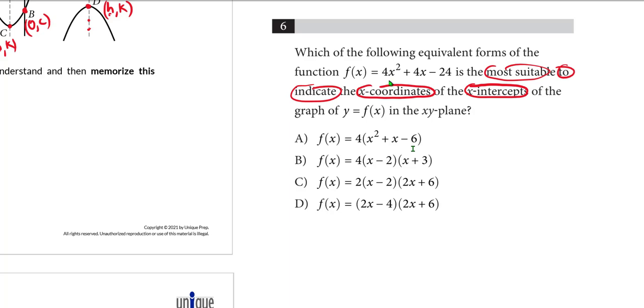However, the easiest way to do a question like this is simply to understand that there is only one form of a quadratic that reveals the x coordinates of the x-intercepts, and that is intercept form. And the beauty of this question, and many others like it, is that only one of these answers is in pure intercept form. Answer choice A is simply standard form with the four factored out. We've just taken the four out of all of these terms. Answer choice B indeed is intercept form. There's your a, there's your p, there's your q, and we have said that p and q are the x coordinates of the x-intercepts.